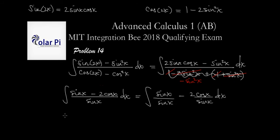So next, we can write that we have the integral of 1 dx, separating into two integrals, and then minus 2 times the integral of cosine x divided by sine x, and then times dx. We're almost done.